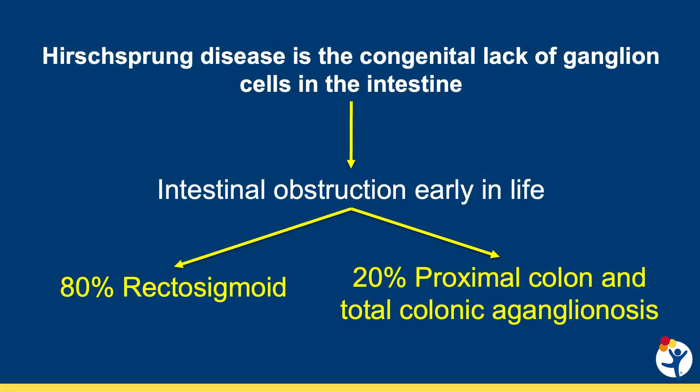Hirschsprung's disease is a congenital condition that causes intestinal obstruction in the first days or weeks of life. The cause of Hirschsprung's disease is the lack of ganglion cells in the intestine. The diagnosis is confirmed with a rectal biopsy showing the absence of ganglion cells and the presence of hypertrophic nerves. Hirschsprung's affects the rectum and sigmoid in 80% of cases and more proximal colon or the entire colon in 20%.